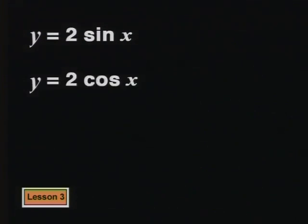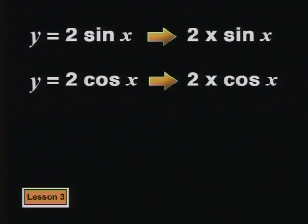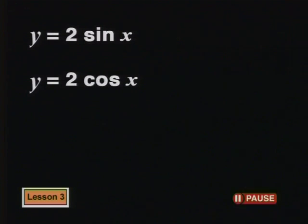So now we have y equal to 2 sine x and y equal to 2 cos x. Be careful here. 2 sine x means 2 times the whole of sine x and 2 cos x means 2 times the whole of cosine x. You can't separate the angle x from the sine or cos ratio. What effect do you think the 2 is going to have on each graph? How will the 2 change the parent graph?